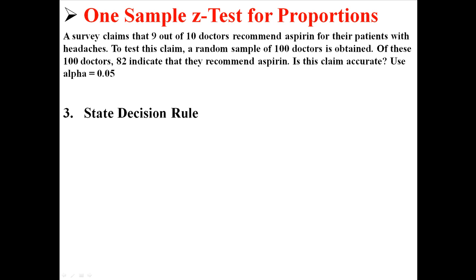The third step is to state the decision rule. Remember, if our alpha is 0.05, and in this case we're doing a two-tailed test, we're looking for the 5% amount of events that are the least likely, and that's going to be split into two tails. We have 2.5 on the left and 2.5 on the right.